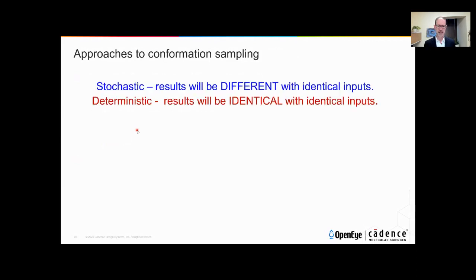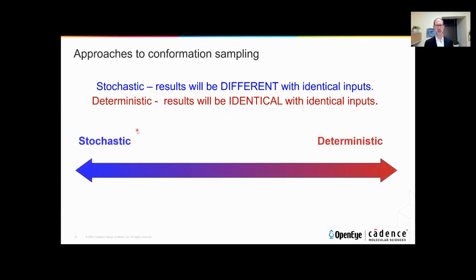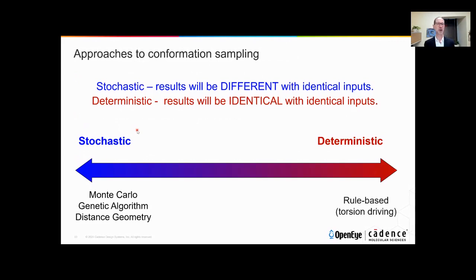Sampling methods split into basically two parts: stochastic methods and deterministic methods. Stochastic methods give you a different outcome with identical inputs; deterministic methods aim to give an identical output with identical inputs. Fully stochastic methods include Monte Carlo (MC), genetic algorithm (GA), and distance geometry (DG). Fully deterministic methods include rule-based approaches, which usually involve torsion driving. Molecular dynamics sits in the middle: Newton's laws of motion are not stochastic, but a combination of floating-point precision and the somewhat chaotic nature of the calculations means they don't always give exactly the same output for the same input.